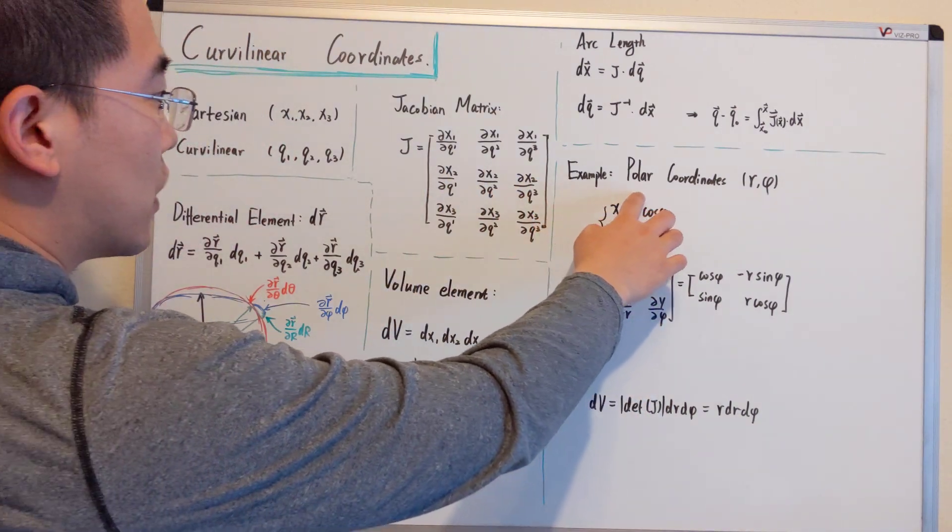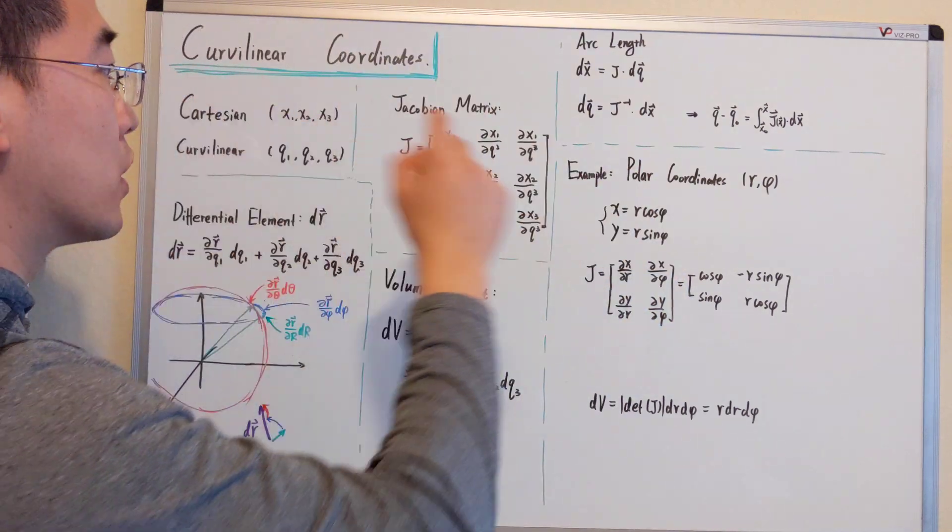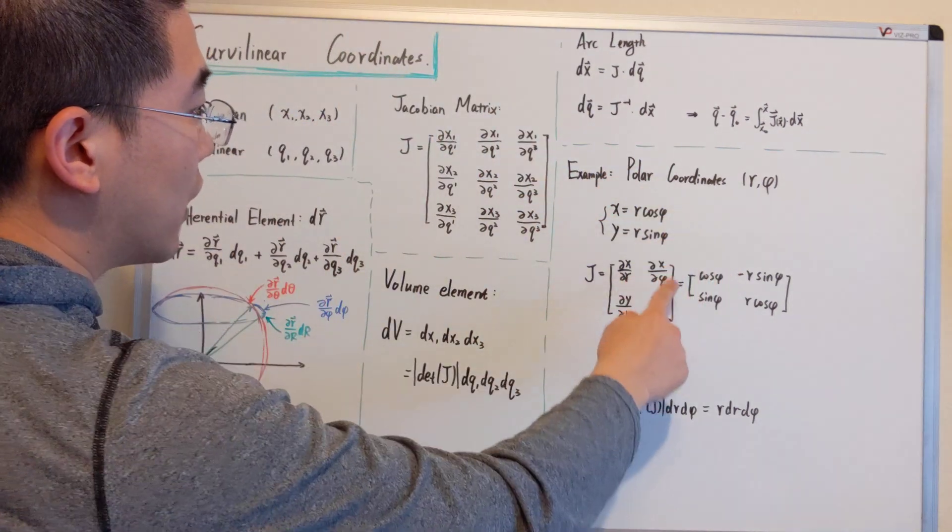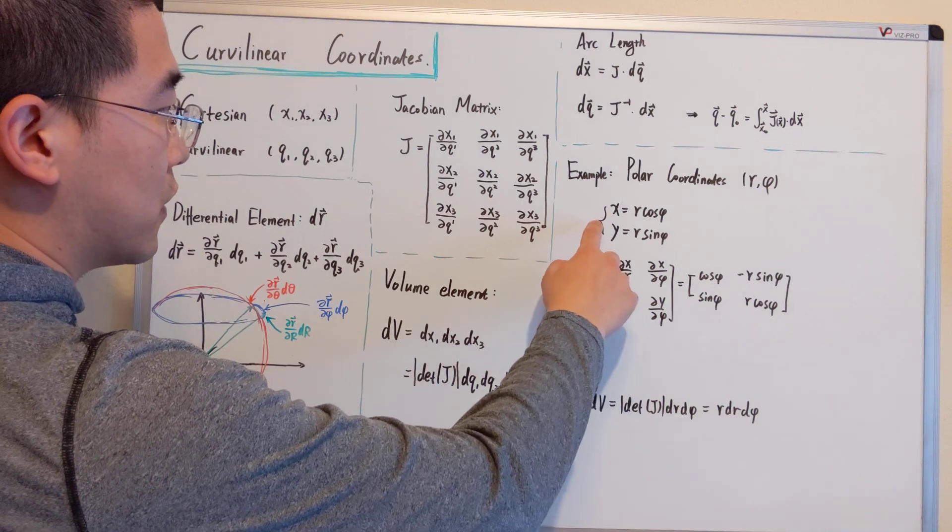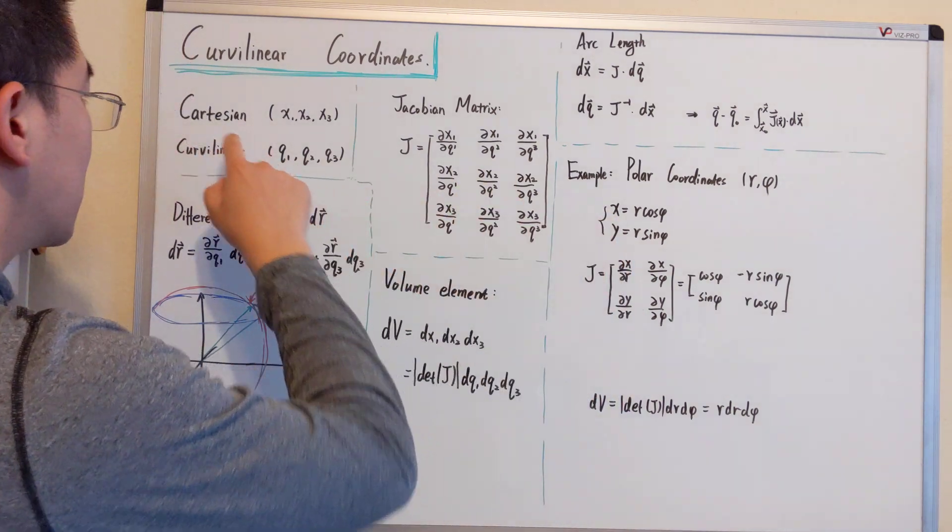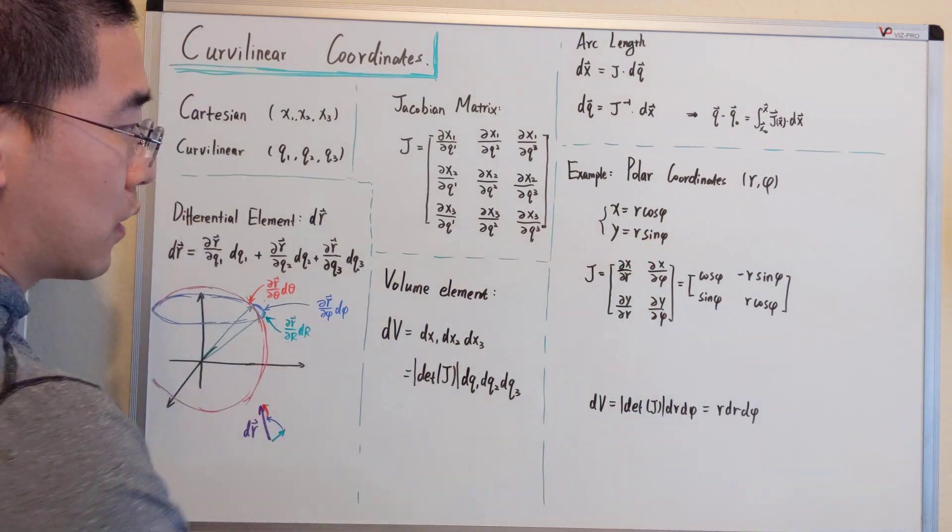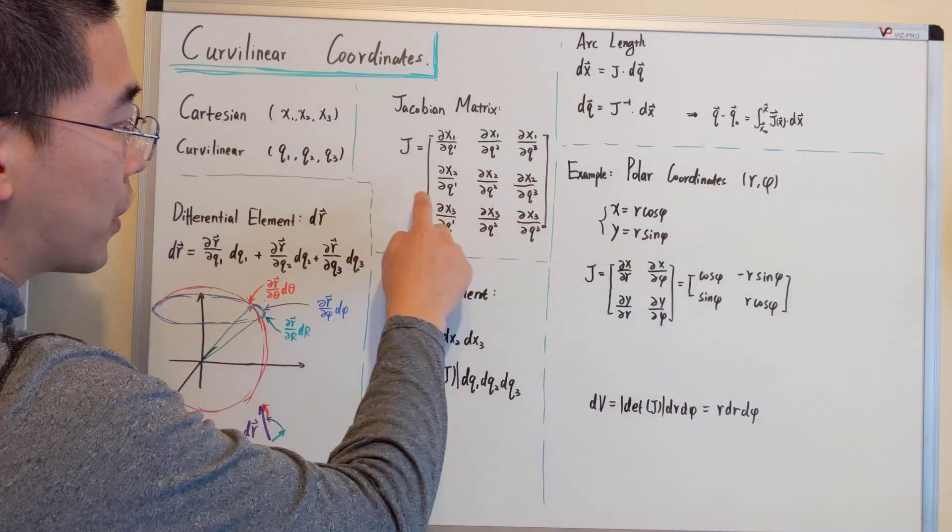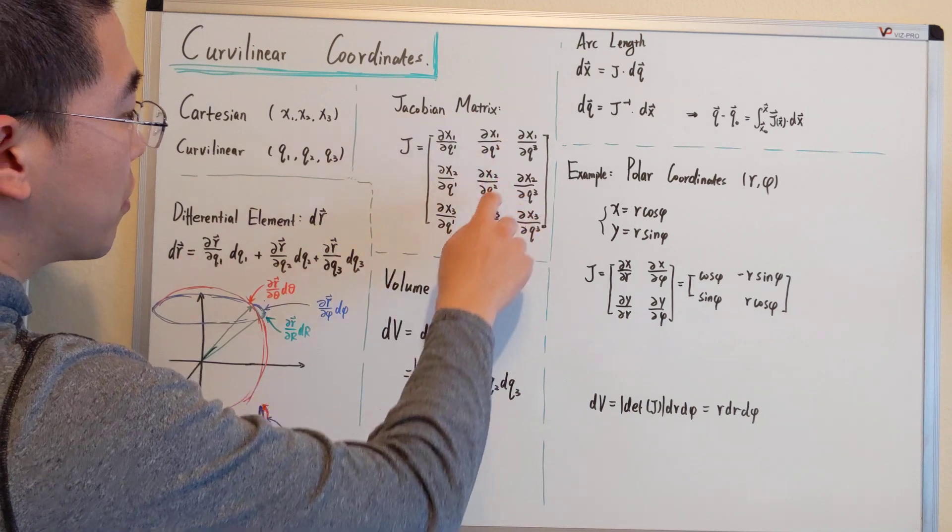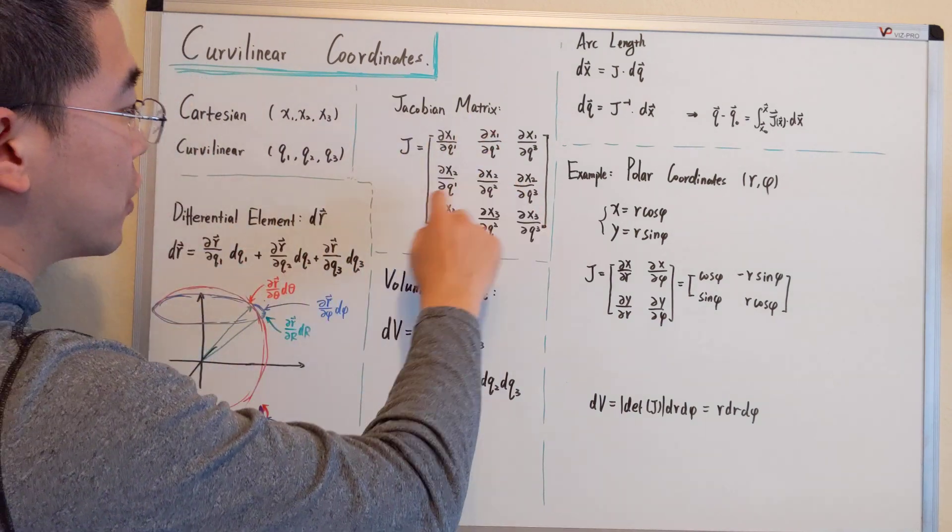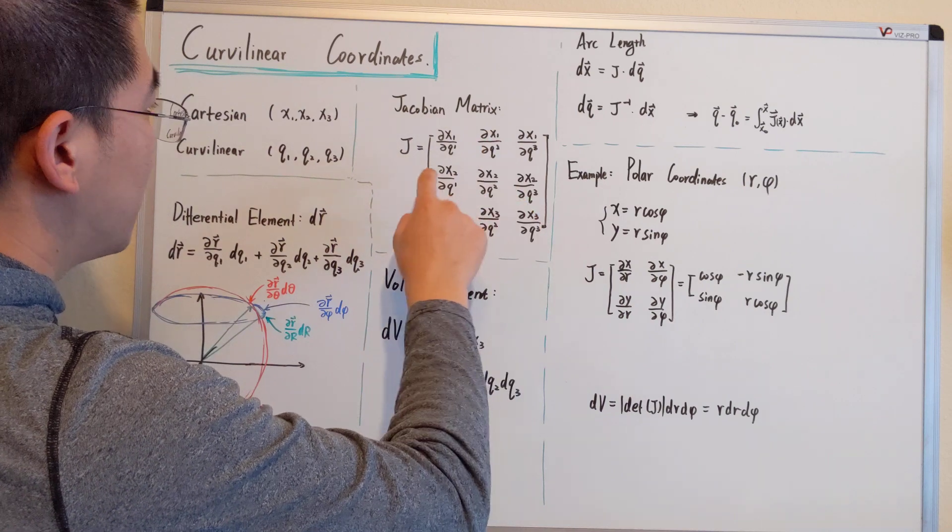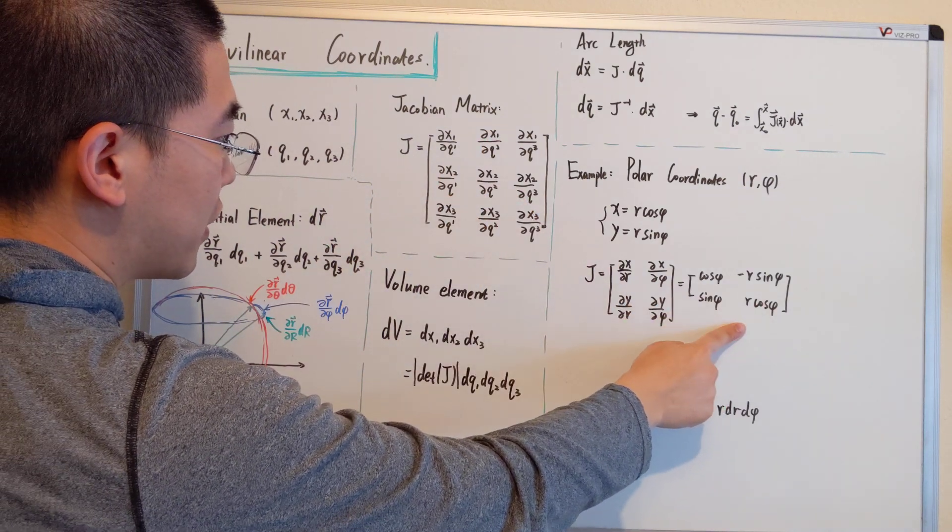Let's look at one specific example, the polar coordinate r, phi. We know that x and y, the Cartesian coordinate, can be expressed in terms of r and phi in this way. Basically, we're doing a 2 by 2 Jacobian for 2D. We have this. If you do the derivative, you will end up finding this.